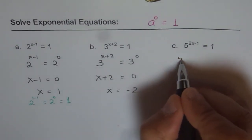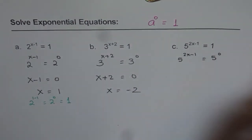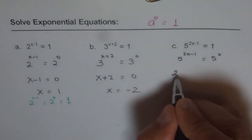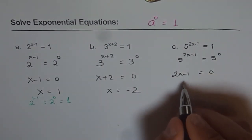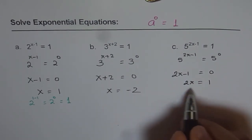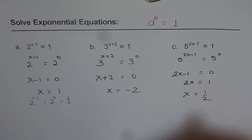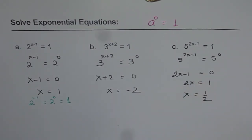And third one is 5 to the power of 2x minus 1 equals to 1, which is 5 to the power of 0. So I can equate 2x minus 1 to 0 and solve for x. Adding 1 on both sides gives me 2x equals to 1. Now divide by 2. x equals to half.